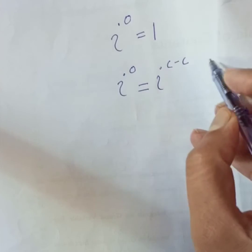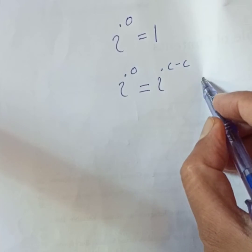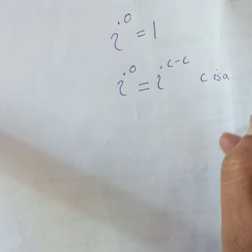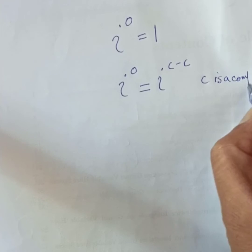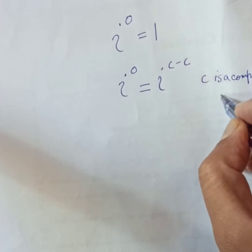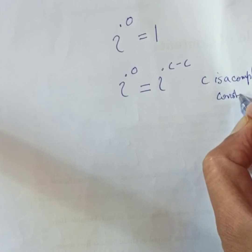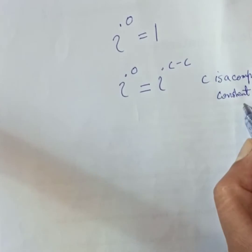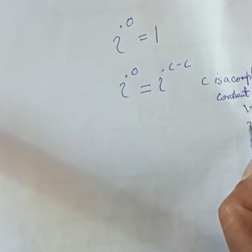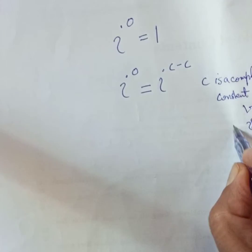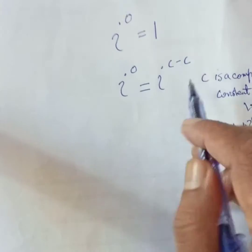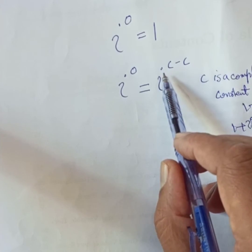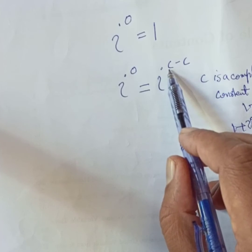It means 1 minus 1, you get 0. If it is a complex number, that is, let's say 1 plus iota minus 1 minus iota, you still get 0. So it can be written in this way: c minus c.